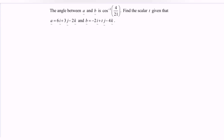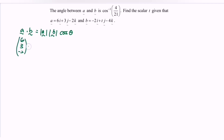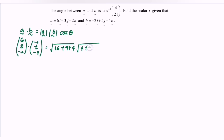We refer to the formula: vector A dot vector B equals the magnitude of vector A multiplied with the magnitude of vector B times cos θ. Substituting the values, we have (6, 3, −2) dot (−2, t, −4) equals the magnitude of vector A, where we have √(36 + 9 + 4), multiplied with √(4 + t² + 16) times cos θ.